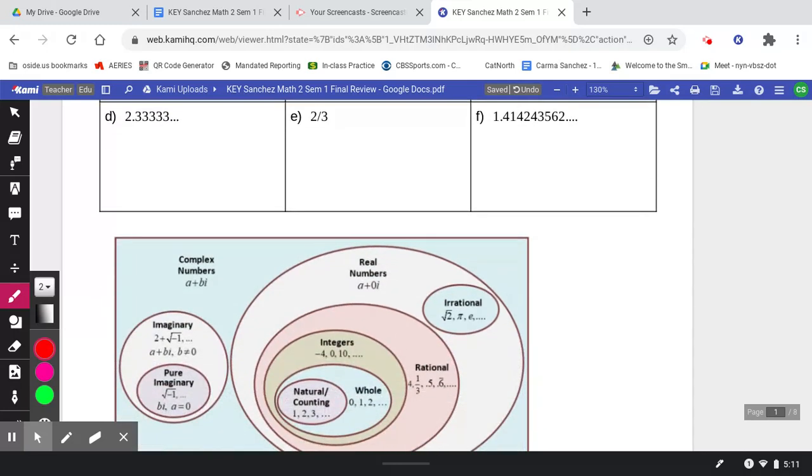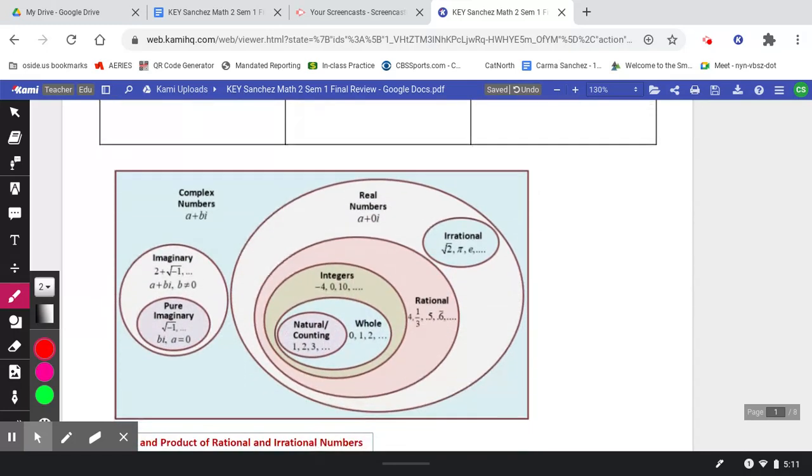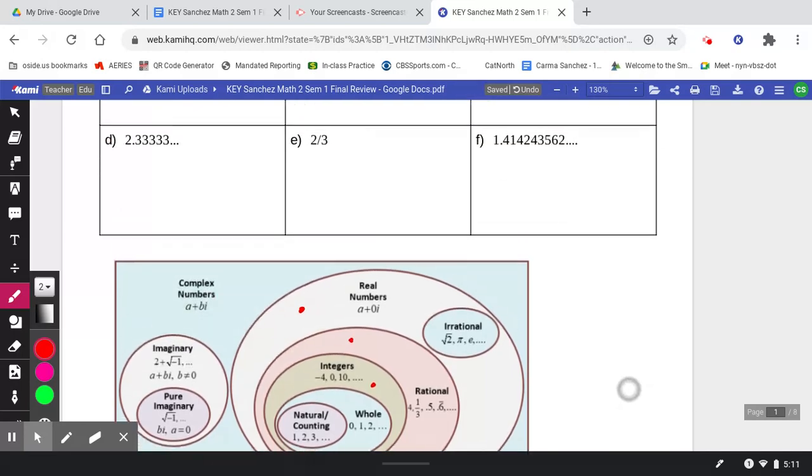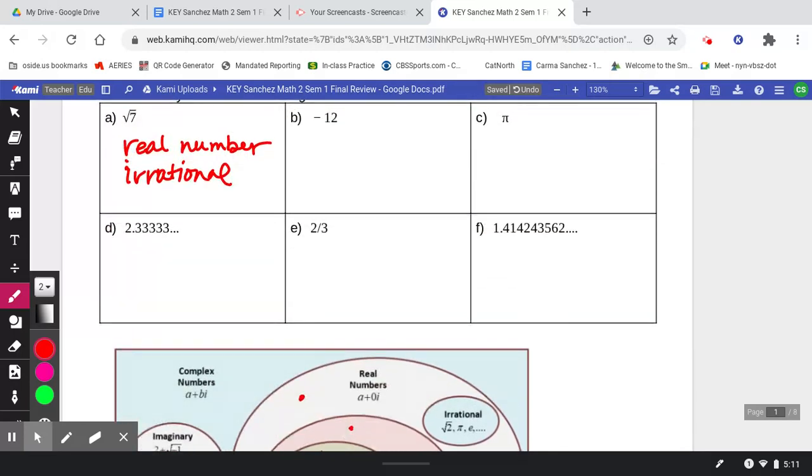Next is -12. Notice that negative numbers are inside of the real numbers, inside of rational numbers. They fall within integers. So I can call it all three of those things. A negative number, most specific, I would call it an integer. I could also call it rational, and I could also call it part of the real numbers.